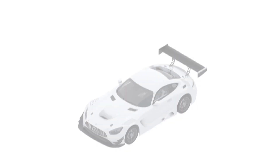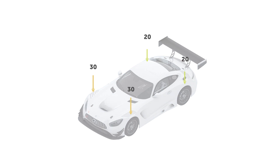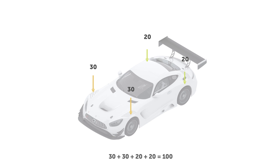Let's start by defining what lateral load transfer is. When a car is sitting statically on a level surface — say when we're doing our setup on a flat patch — the vertical load on each tyre is largely defined by how the mass is distributed around the car and any corner weighting adjustments we've made. When the car is driving in a straight line at constant speed, if we ignore transient loads from bumps and any aerodynamic forces, the vertical load on each tyre will be very similar to what we've measured on the flat patch.